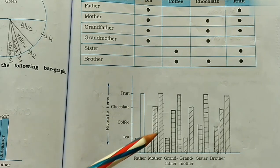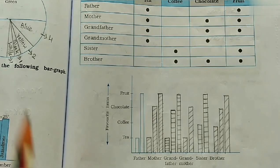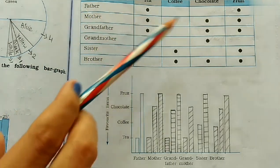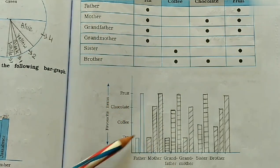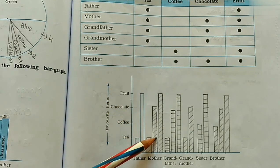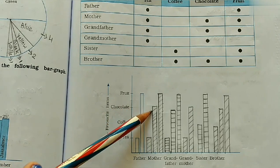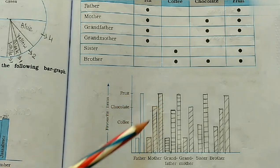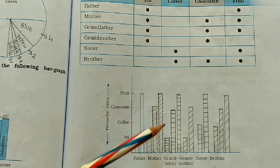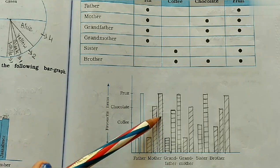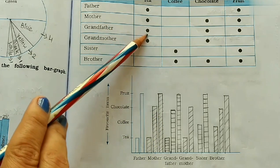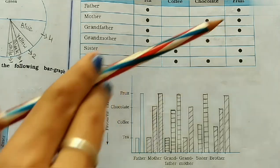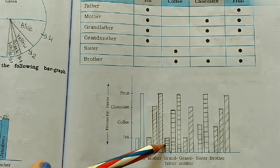Like this, we have to draw all the others. Now see what mother likes. Mother likes tea, chocolate, and fruit. Tea is till here, then mother likes chocolate — you have to draw like this — and fruit. So mother likes tea, chocolate, and fruit. Grandfather also likes tea, chocolate, and fruit, same as mother.